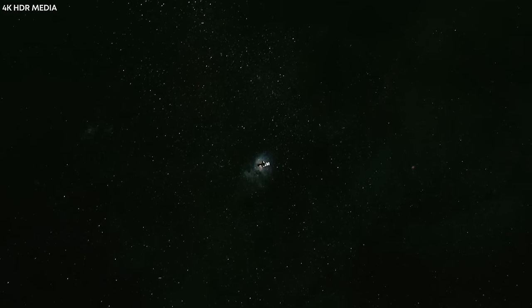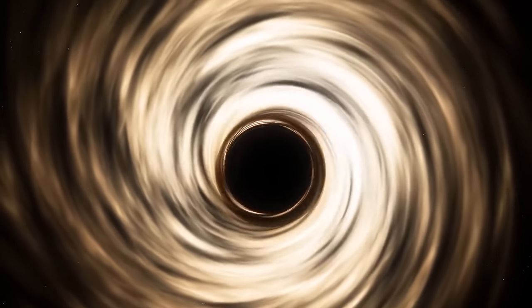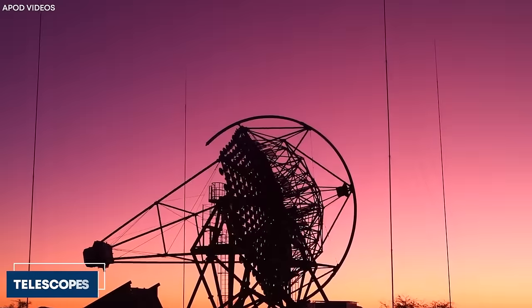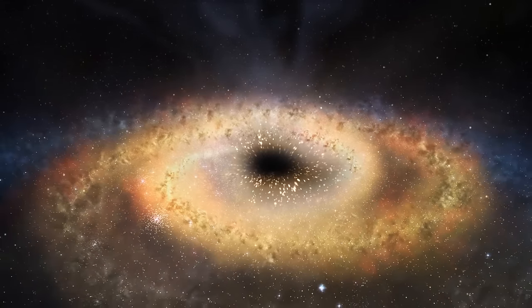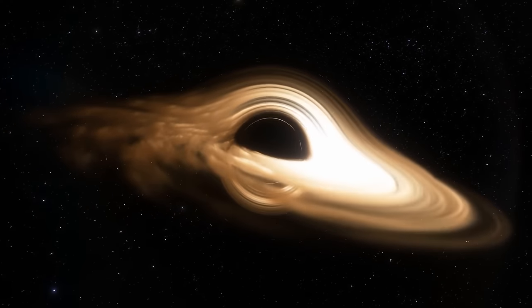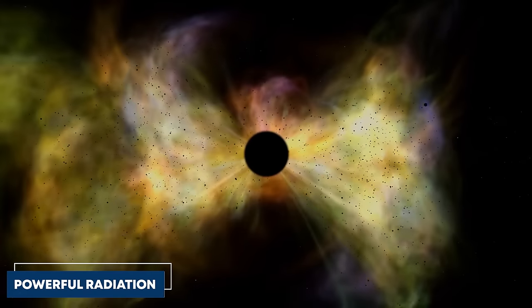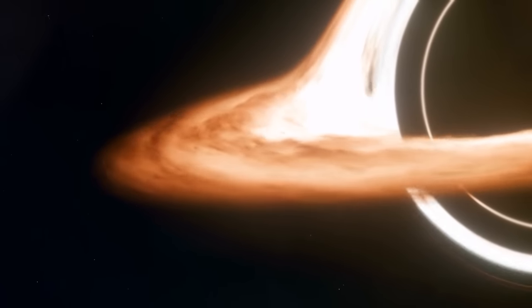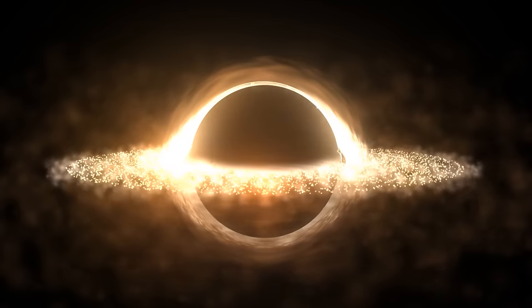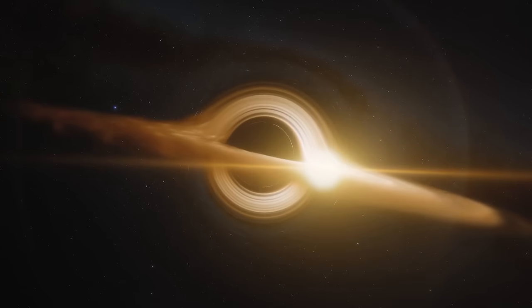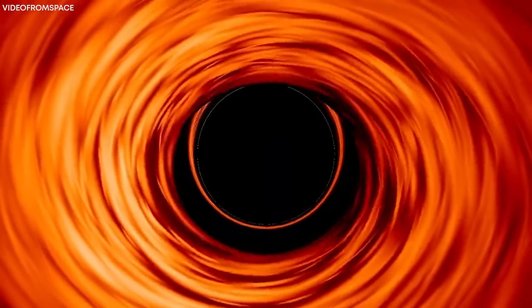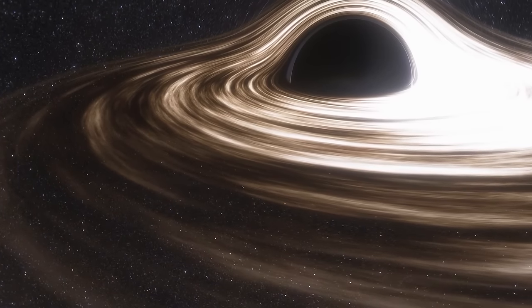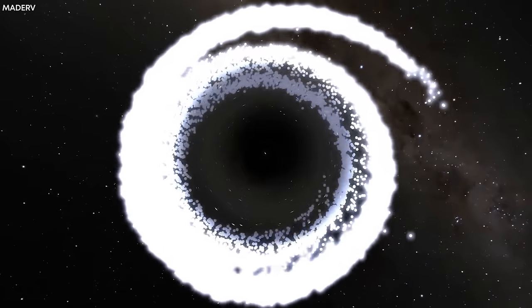As the object gets closer to the black hole, it starts moving faster and getting hotter because of the black hole's strong pull. This process can make the object give off radiation, which we can detect with telescopes. As the object gets even closer, entering a swirling disk of gas and dust that surrounds the black hole, this disk, called an accretion disk, gets incredibly hot, emitting powerful radiation as the material spirals toward the black hole. Eventually, the material in the accretion disk gets so close to the black hole that it crosses a point of no return called the event horizon. Once it passes this point, it's pulled into the black hole and disappears. The material gets squeezed and heated to extreme temperatures, releasing intense radiation as it falls into the black hole.